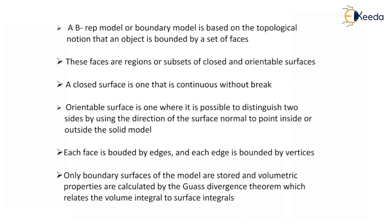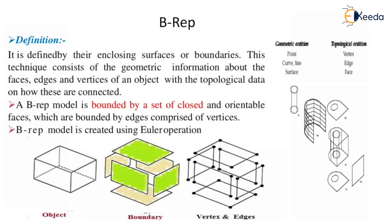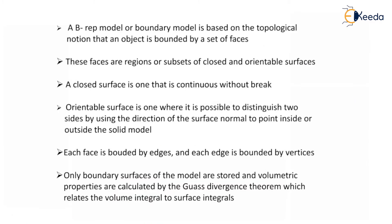A B-Rep or boundary model is based on the topological notion that an object is bounded by a set of faces. These faces are regions or subsets of closed and orientable surfaces. A closed surface is one that is continuous without break. An orientable surface is one where it is possible to distinguish two sides by using the direction of surface normal to point inside or outside the solid model.